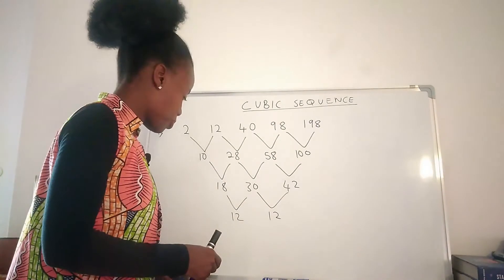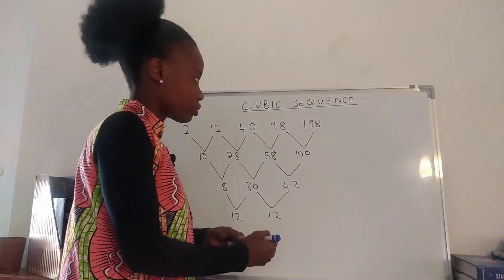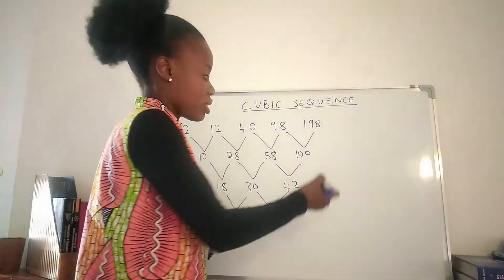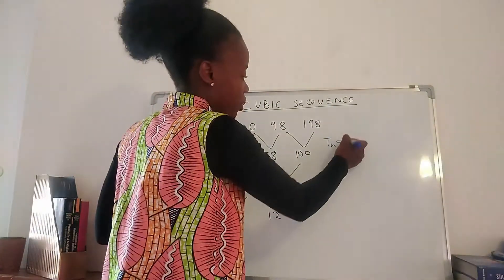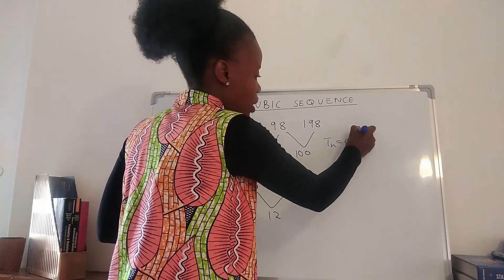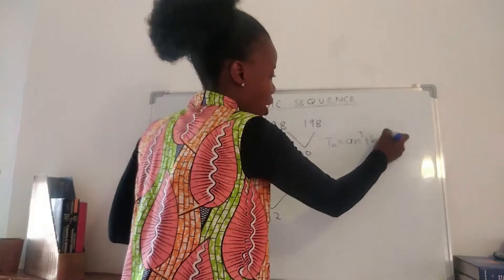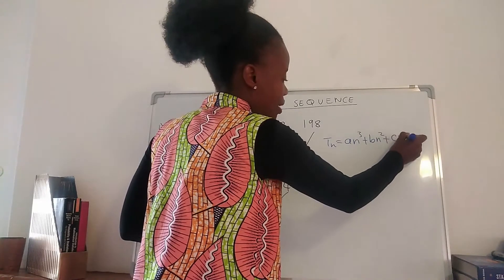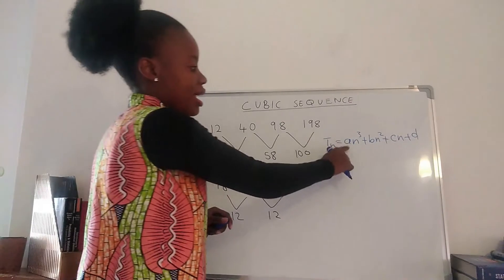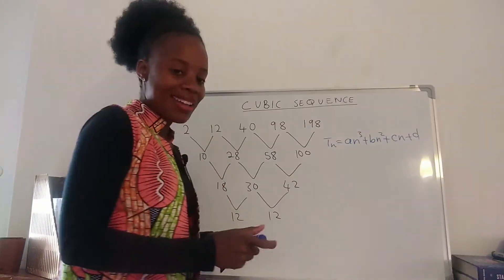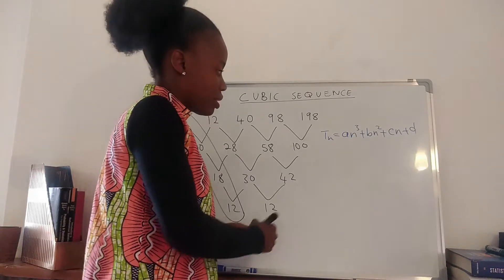Now let's find the formula or expression. For a cubic sequence we have T(n) equals a·n³ plus b·n² plus c·n plus d. We're going to find a, b, c, and d.